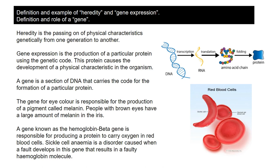A gene causes a particular eye colour - how does it do that? A gene causes the production of a protein and that protein produces the eye colour. Another way of saying that is that a gene is a section of DNA that carries a code for the formation of a particular protein. That phrase is quite important: a section of DNA that carries a code for the formation of a particular protein.